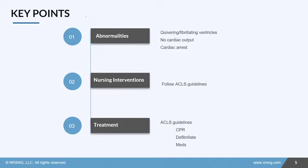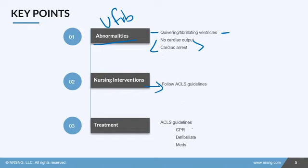The key points to remember: V-fib means the ventricles are fibrillating — there is absolutely no contraction, no cardiac output, and your patient is in full cardiac arrest. Nursing interventions require you to quickly follow the ACLS guidelines: do CPR, defibrillate, and administer medications according to ACLS protocol.